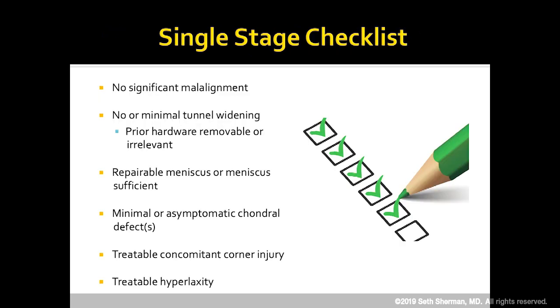I have a checklist for single-stage: no significant malalignment, no or minimal tunnel widening, prior hardware is either removable or irrelevant, repairable meniscus or sufficient meniscus, minimal or asymptomatic cartilage defects, treatable concomitant corner injuries, and treatable hyperlaxity. If all these apply, I can go single-stage.